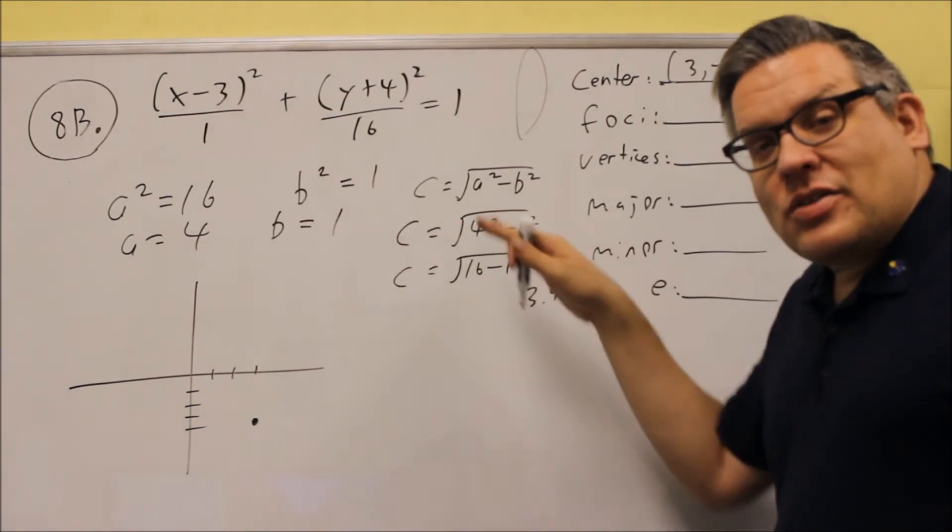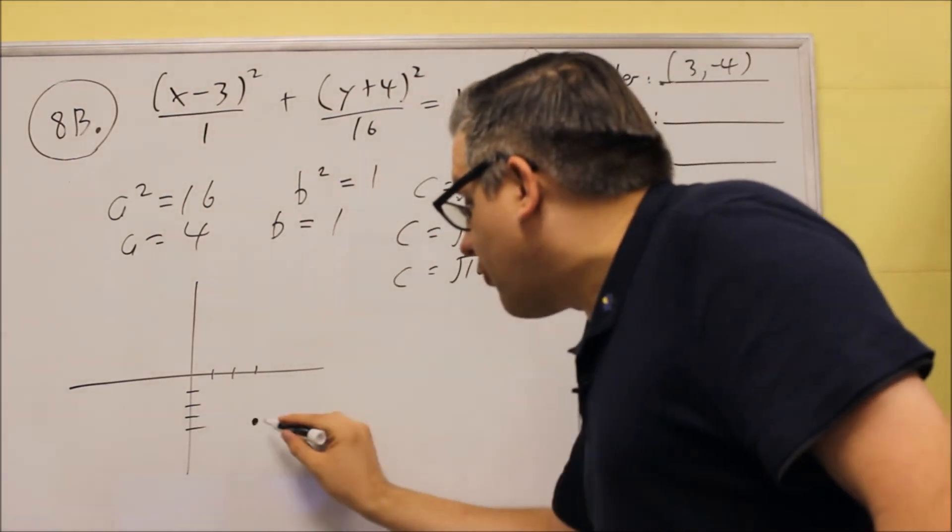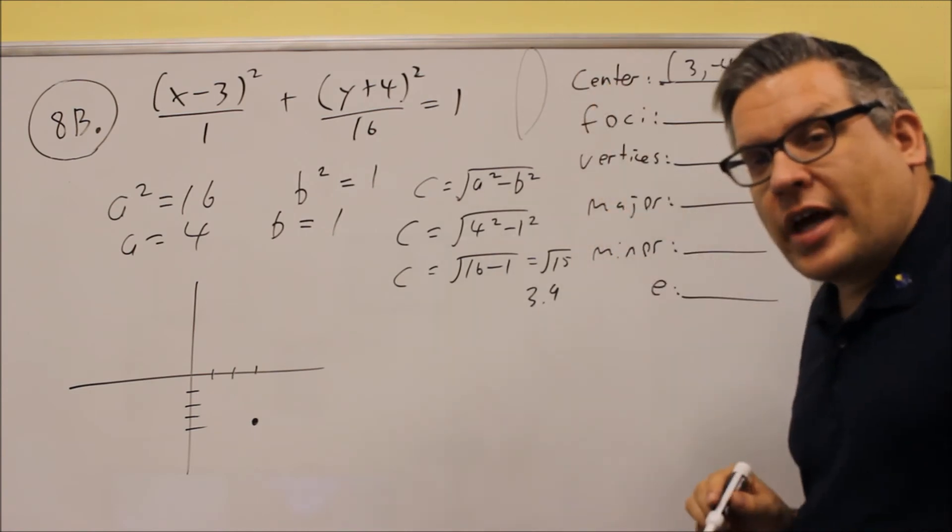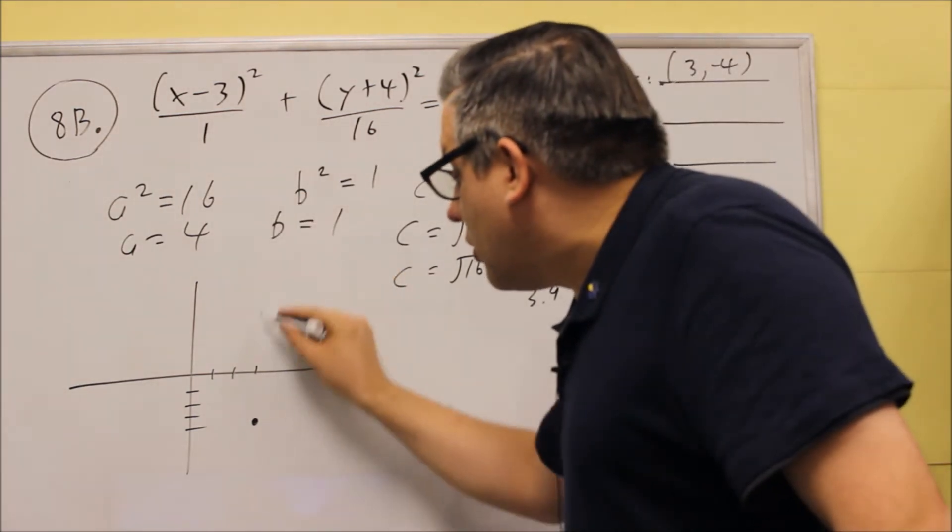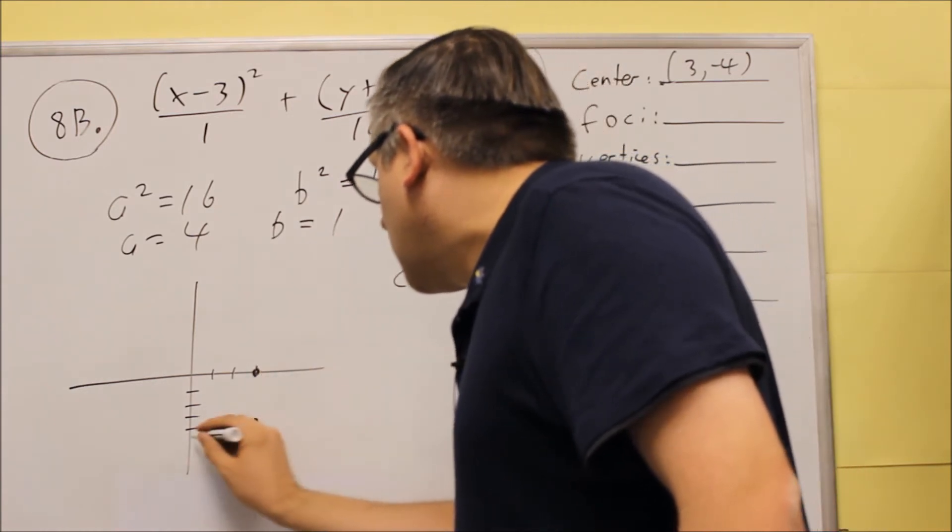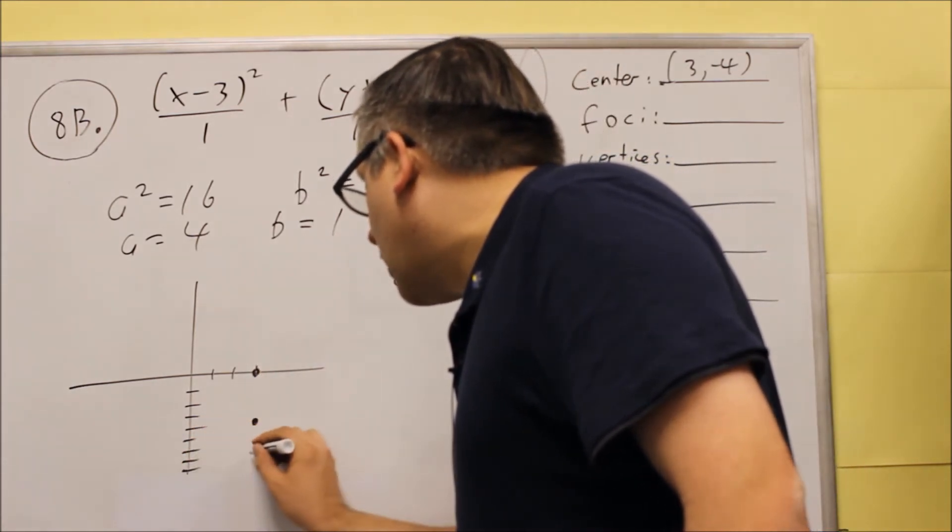Your numbers for a and b and c, all that is measured from the center. Since I know that it goes up and down, the a value is going to go up and down. So from this part we're going to go up 4 and we're going to go down 4.